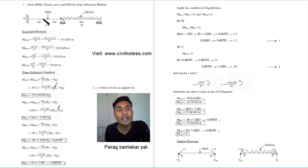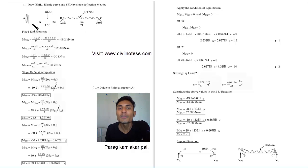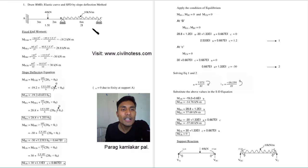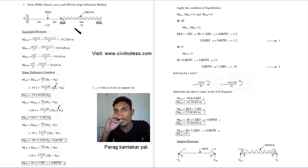For fixed moment AB, it is W·a·b² divided by L² where b is the opposite distance. The sign convention is: AB is anticlockwise so it is negative, BA is clockwise so it is positive. Similarly BC is anticlockwise so it is negative, CB is clockwise so it is positive. For span BC with UDL, the formula is w·L² divided by 12. So fixed moment BC is minus w·L²/12 and fixed moment CB is plus w·L²/12.